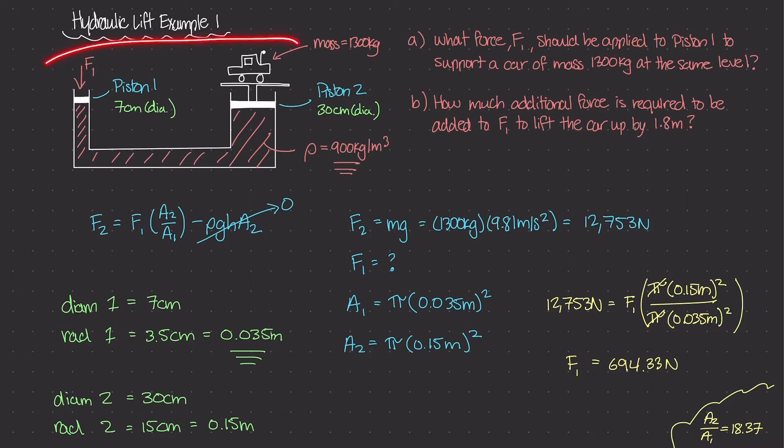And so right now, this system that we're looking at is in hydrostatic equilibrium. We have an F1 force being applied to piston 1 to basically counteract the force being applied by this car sitting on piston 2. So this question right here, part B, is asking how much additional force is required to be added to F1 in order to lift the car up by 1.8 meters.